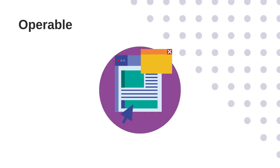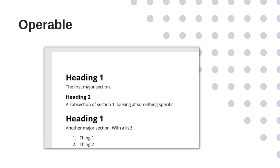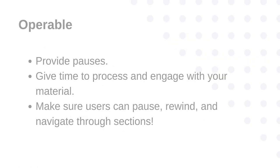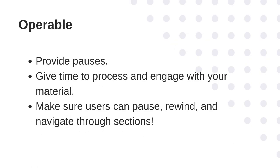Next, content should be operable — users should be able to navigate, interface with, and properly process your content. For text-based projects, this is usually handled through headings, which provide structure and outline to your text visually while also serving as a machine-readable outline for screen readers. You don't want to just make text 24-point font and bold to make it look like a heading. You should also use the actual heading tools built into your word processor of choice to denote what the sections in your text are. For audio and video projects, this might mean you put in pauses so your audience has time to process and engage with your material, or it could be as simple as using a tool that allows pausing, rewinding, and navigating through sections — sort of like hitting the go-back-5-seconds button on a YouTube video.